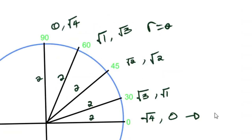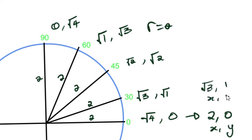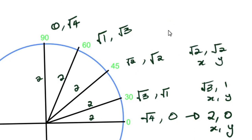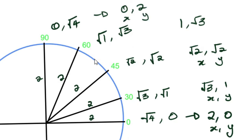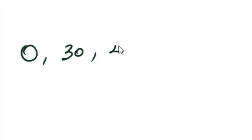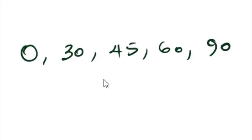Now if you get the values for each angle: for 0°, that's the same as writing x = 2 and y = 0. For 30°, x = root 3 and y = 1. For 45°, x and y are both root 2. For 60°, it would be x = 1 and y = root 3. And finally for 90°, that's x = 0 and y = 2.